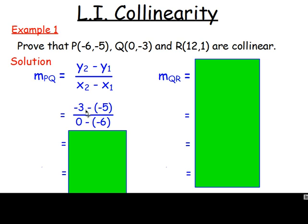Just work that out. Remember, subtracting a negative, you add. So negative three add five and then zero add six. So that gives you two sixths. Just simplify it if you can, that would give you one third.